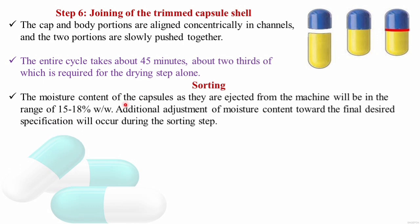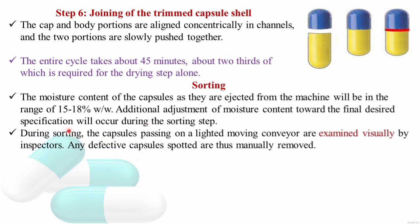Step 7: Sorting. The moisture content of capsules when ejected from the machines ranges from 15 to 18 percent; additional adjustment toward the final desired specification occurs during this sorting step. During sorting, capsules pass on a lighted moving conveyor and are examined visually by inspectors. Any defective capsules are spotted and removed manually.